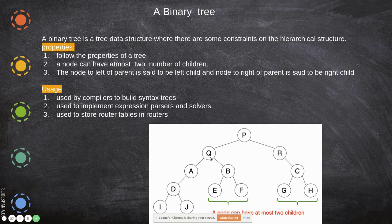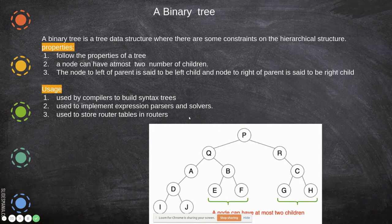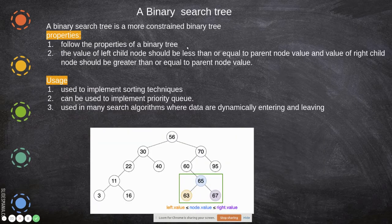A node can have at most two children. The node to the left of the parent is called the left child, and to the right is called the right child. Binary trees are mostly used by compilers to build syntax trees, to implement expression parsers and solvers, and to store router tables in networks.